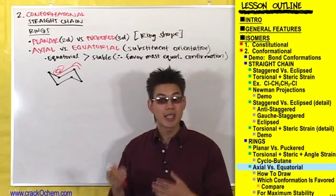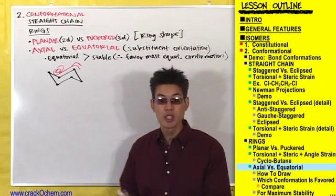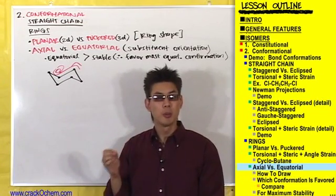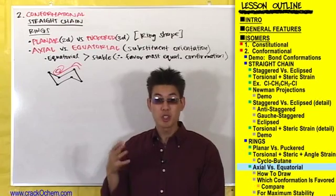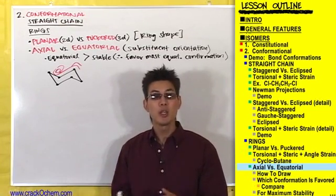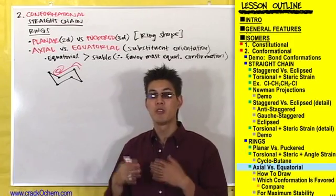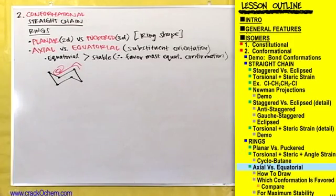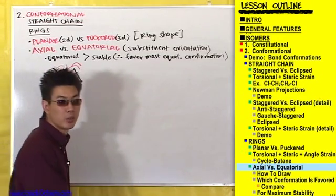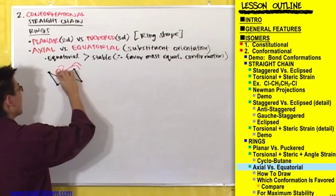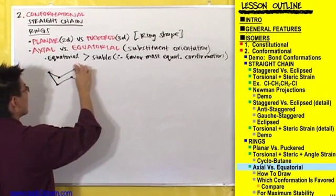Let me show you how to draw axial substituents coming off the carbons of this ring. There's a formal method you can read about in your textbook, but let me show you a more visual method.